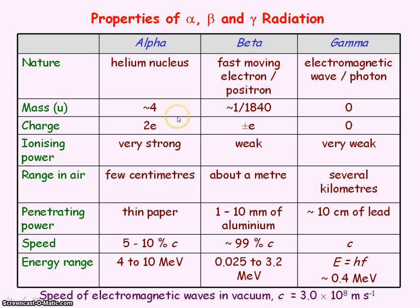So the alpha particle is heavy, has a mass of about four U's, where U is an atomic mass unit. The beta particles are the mass of an electron. And the gamma rays have no mass.